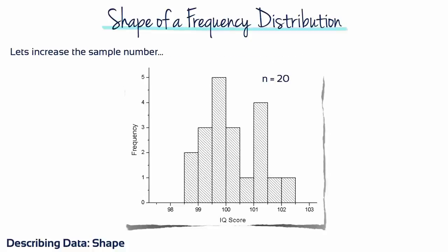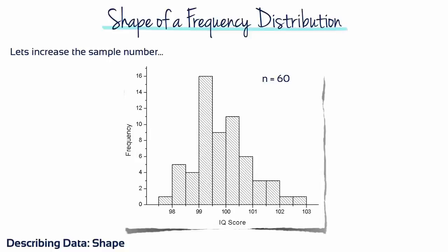Let's increase the sample size to 20 individuals. Look at the overall shape in this histogram. Again, the highest frequency value is close to 100 with fewer people above or below.